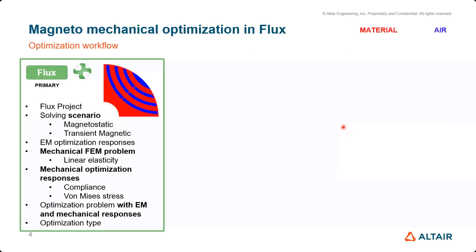Moving on to the workflow: first, you need to completely define your Flux project as normal — whether it is a magnetostatic or transient magnetic problem. Then comes defining your optimization completely, where you define your objectives and constraints. Once you have that, you start your optimization.